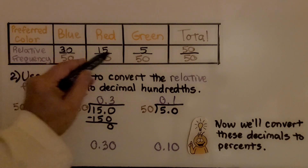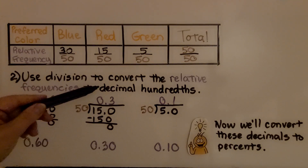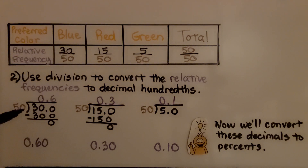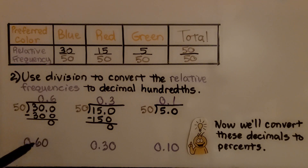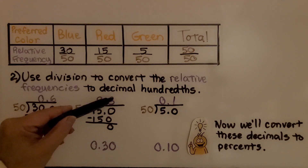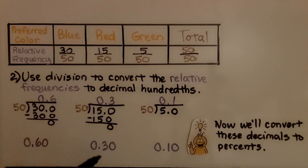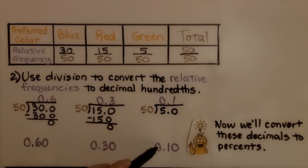Now we have them written as ratios. We use division to convert the relative frequencies to decimal hundredths. So 30 fiftieths — we do 30 divided by 50 — and we get 0.6, or 60 hundredths. Here we have 15 fiftieths, which is 0.3, or 30 hundredths. And for 5 fiftieths, we get 0.1, which is 10 hundredths.